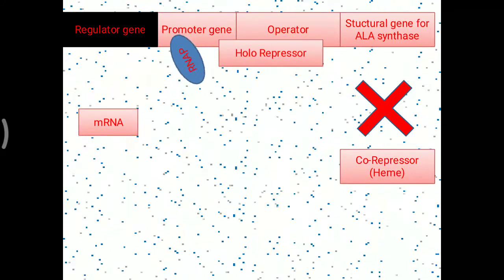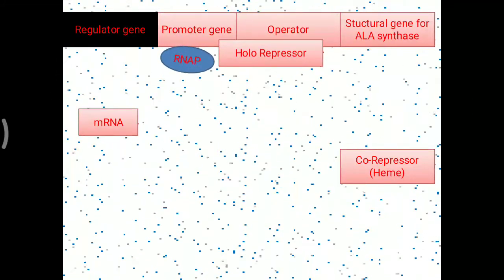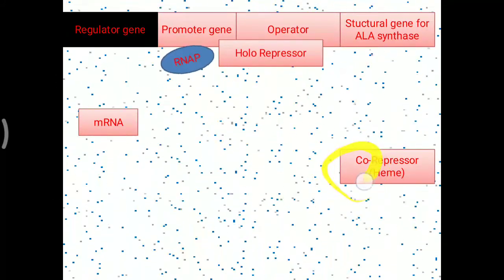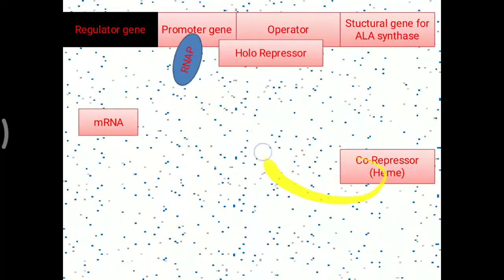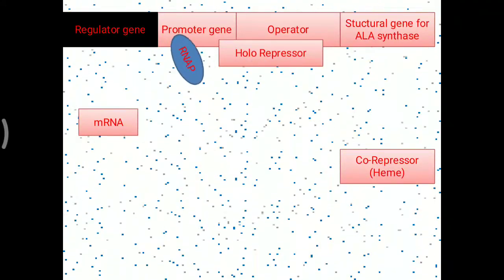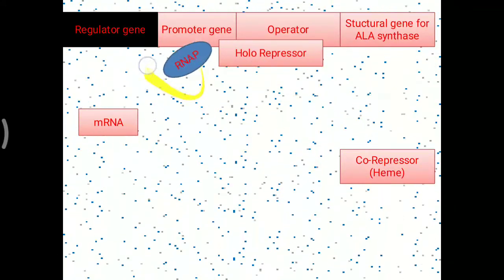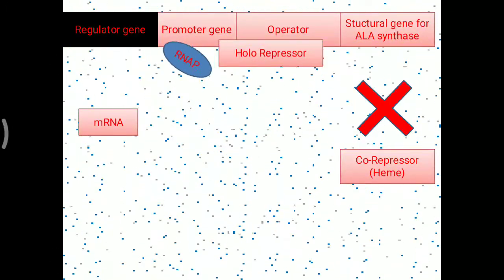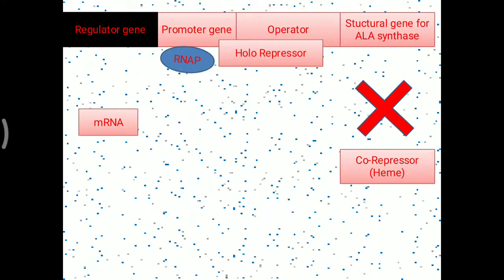Conversely, when the level of heme is low, the corepressor is not present, so the holorepressor will not be generated. Then RNA polymerase resumes activity and heme synthesis is continued.